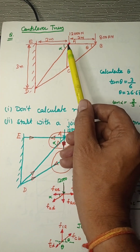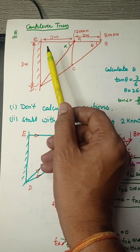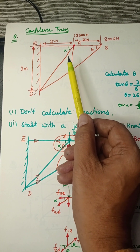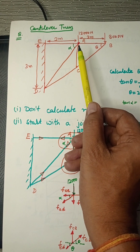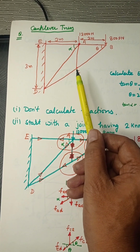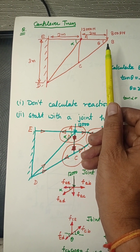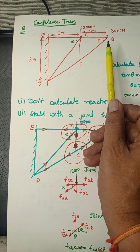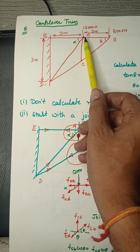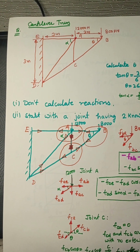When we solve these three joints: the force in AE we can determine if we analyze A; force in AD we determine if we analyze A; force in CD we can determine if we analyze C. So if they ask us to find forces in all the members, we have to analyze only joint B, then joint A, then joint C.